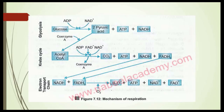Before entering the Krebs cycle, pyruvic acid is changed into a two-carbon compound called acetyl coenzyme A. By entering the Krebs cycle, pyruvic acid first changes into the two-carbon compound acetyl coenzyme A in the presence of coenzyme A. Next, in the Krebs cycle, the pyruvic acid molecules are completely oxidized — acetyl coenzyme A is completely oxidized with the formation of ATP, NADH, and FADH2.